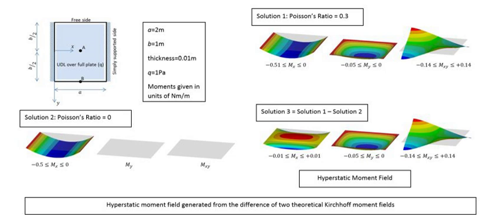A preloaded structure is one that has internal forces, stresses and strains imposed within it by various means prior to application of externally applied forces. For example, a structure may have cables that are tightened, causing forces to develop in the structure before any other loads are applied. Tempered glass is a commonly found example of a preloaded structure, where tensile forces act in the central plane of the glass causing compression forces to act on the external surfaces. The mathematical problem is typically ill-posed because it has an infinitude of solutions; in any three-dimensional solid body one may have infinitely many non-zero stress tensor fields that are in stable equilibrium even in the absence of external forces.